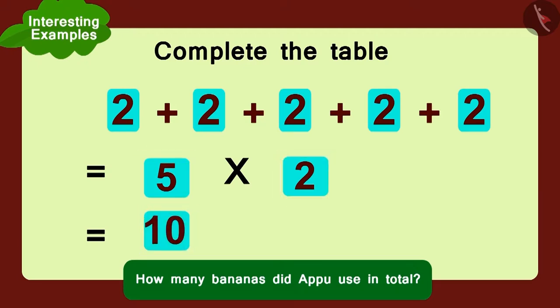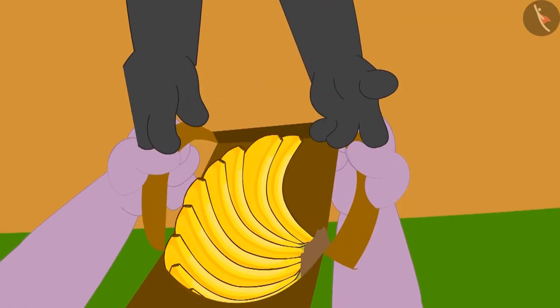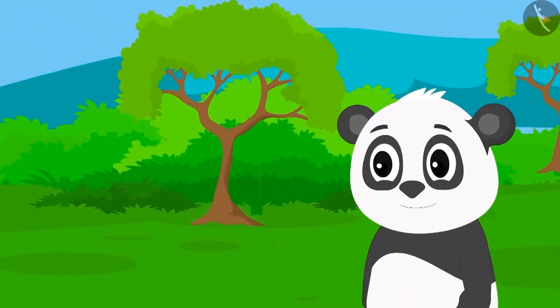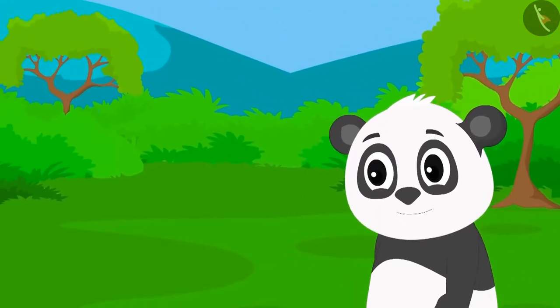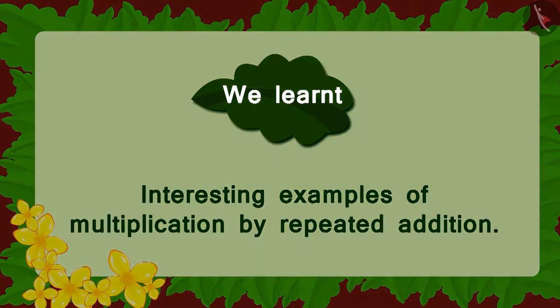So Appu bought all the bananas from Golu that day. Golu went home very happy. Children, in this lesson we saw an interesting example of multiplication with repeated addition.